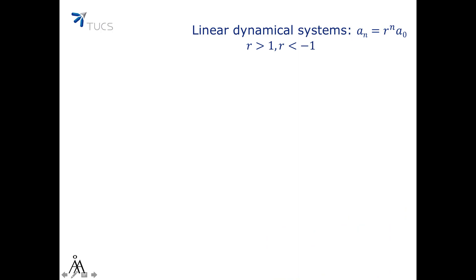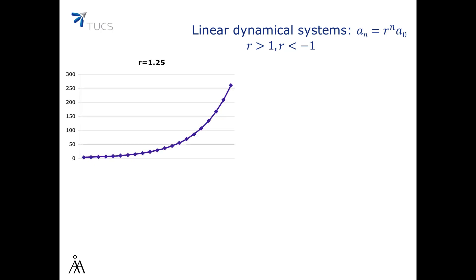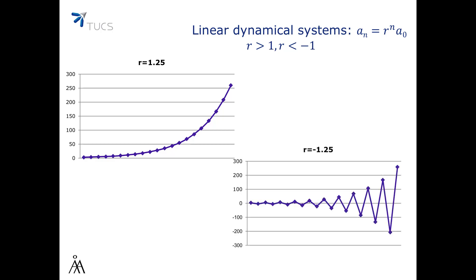Consider now the cases when either r > 1 or r < -1. In the first case, if r > 1, then rⁿ goes to infinity and so the whole sequence will go to infinity. In the second case, if r < -1, then rⁿ will switch between positive and negative numbers both with larger and larger absolute values. This means that the even terms will tend to infinity and the odd terms will tend to minus infinity.